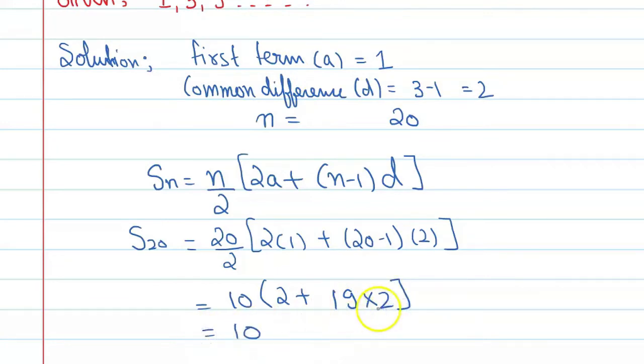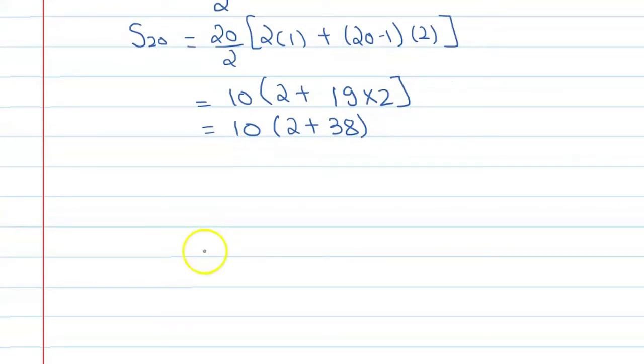Next, 19 into 2 means it is 38. And then we will find the value: 2 plus 38 is 40. So 10 into 40. So we can say S20 is equal to 400.